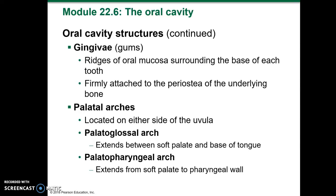Then you have the palatal arches, located on either side of the uvula. The palatoglossal arch extends between the soft palate and the base of the tongue, and the palatopharyngeal arch extends from the soft palate to the pharyngeal wall.